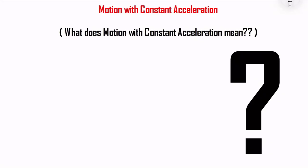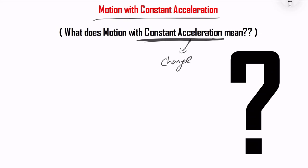Now we are going to talk about motion with constant acceleration. What does it mean? It does not mean constant velocity or constant speed. Acceleration is the change in velocity, so constant acceleration means the velocity is changing constantly — at a steady rate.